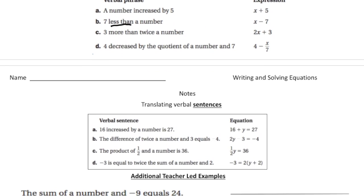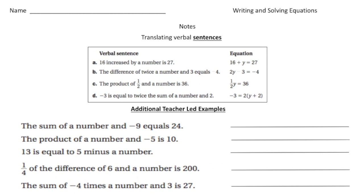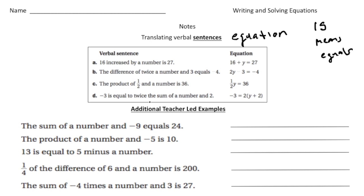Now we're going to talk about verbal sentences. Before it was verbal phrases — a verbal phrase is an expression. A verbal sentence means an equation. The key word: anytime you see the word 'is,' in math it normally means equals.